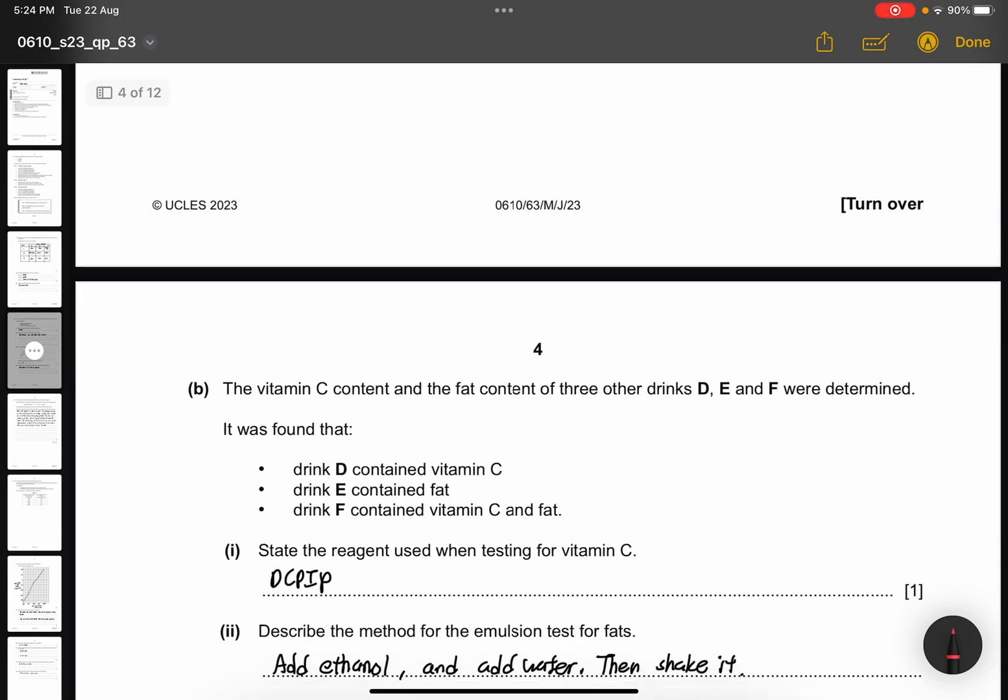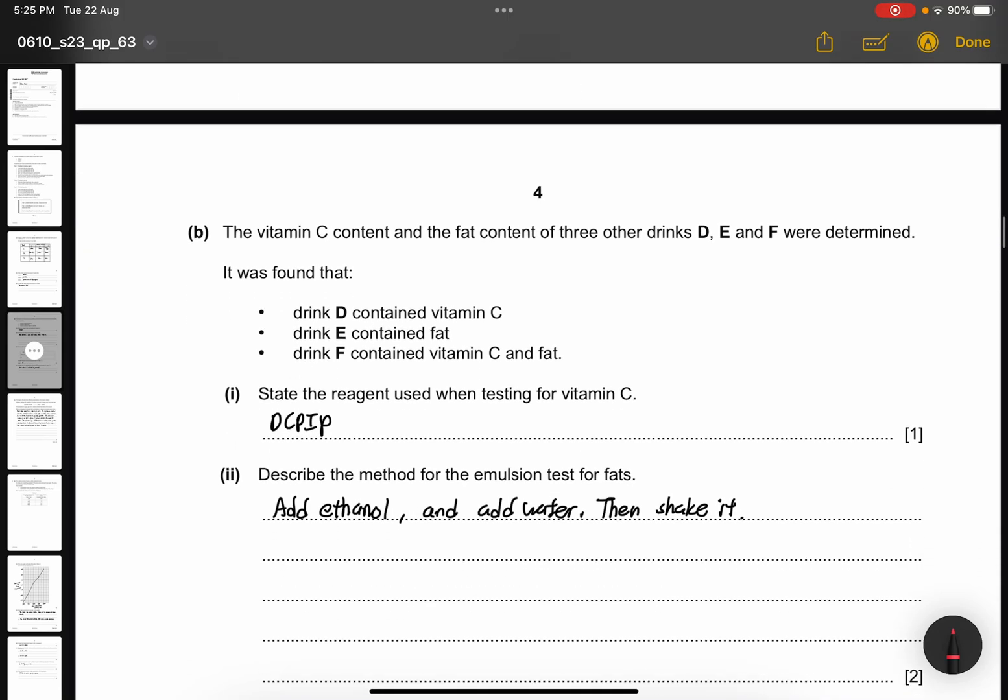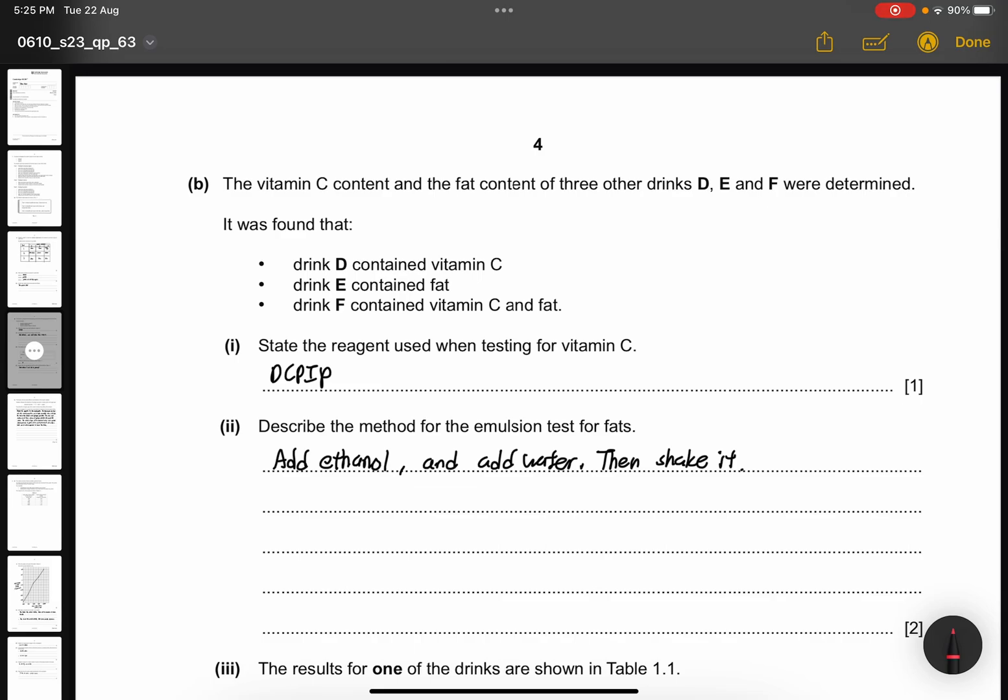Part B. The vitamin C content and the fat content of 3 other drinks D, E, and F were determined. It was found that drink D contained vitamin C, drink E contained fat, and drink F contained vitamin C and fat. Part 1, state the reagent used when testing for vitamin C: DCPIP. Part 2, describe the method for emulsion test for fats. So it's to add ethanol, add water, then shake so that ethanol and water can be mixed together.